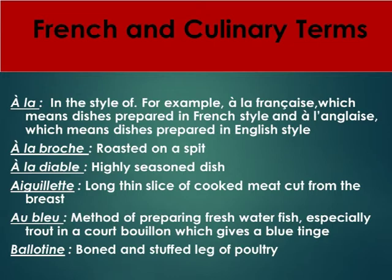'Aiguillette' refers to a long thin slice of cooked meat cut from the breast. 'Au bleu' is a method of preparing freshwater fish, especially trout, in a court bouillon which gives a blue tinge. 'Ballotine' is a boned and stuffed leg of poultry.